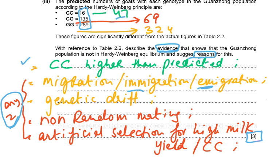You must give CC is higher than predicted as the evidence, and then any two reasons from: migration, immigration, emigration, genetic drift, non-random mating, or artificial selection for high milk yield. These are the factors from your book explaining when Hardy-Weinberg doesn't work. Always read the question to see what is being asked — if two things are asked, marks are split accordingly.